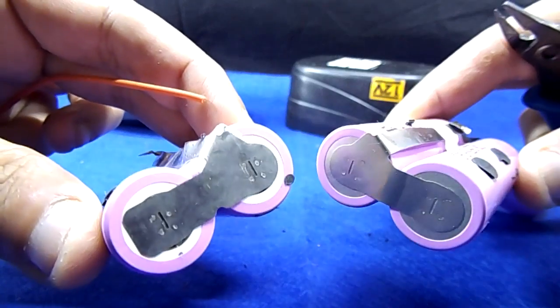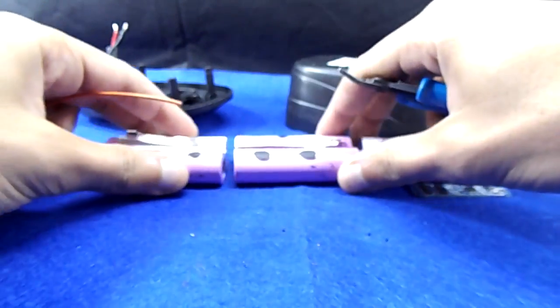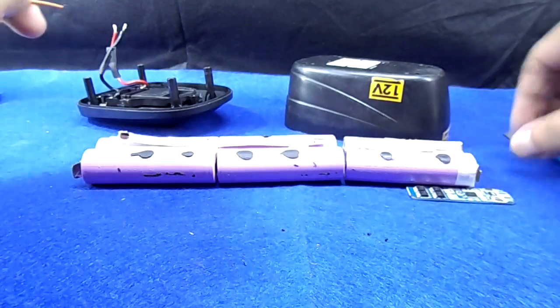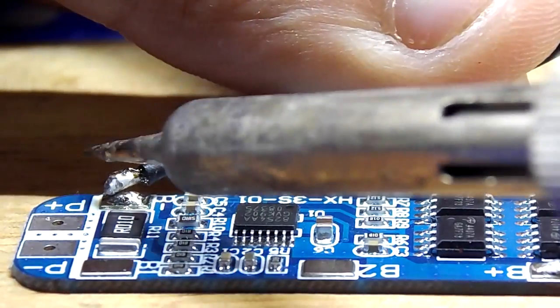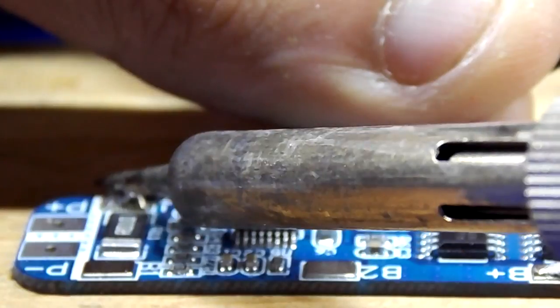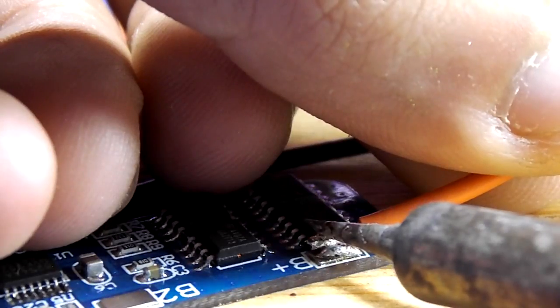Now connect these three sets in series. I have two of them connected already. I'm going to connect battery negative to B minus and battery positive to B plus.